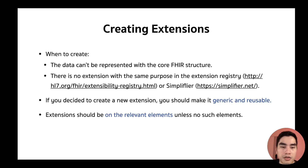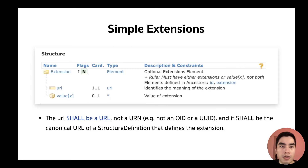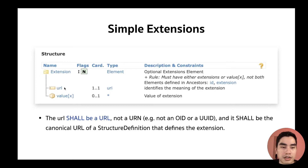In this session, you'll see there are many places you can put an extension. The good practice is to put the extension on the relevant elements unless there are no such elements. Extensions can be simple or complex. All extensions, whether simple or complex, will have a URL element — a canonical URL, the same kind used for identifying a code system in the last session.